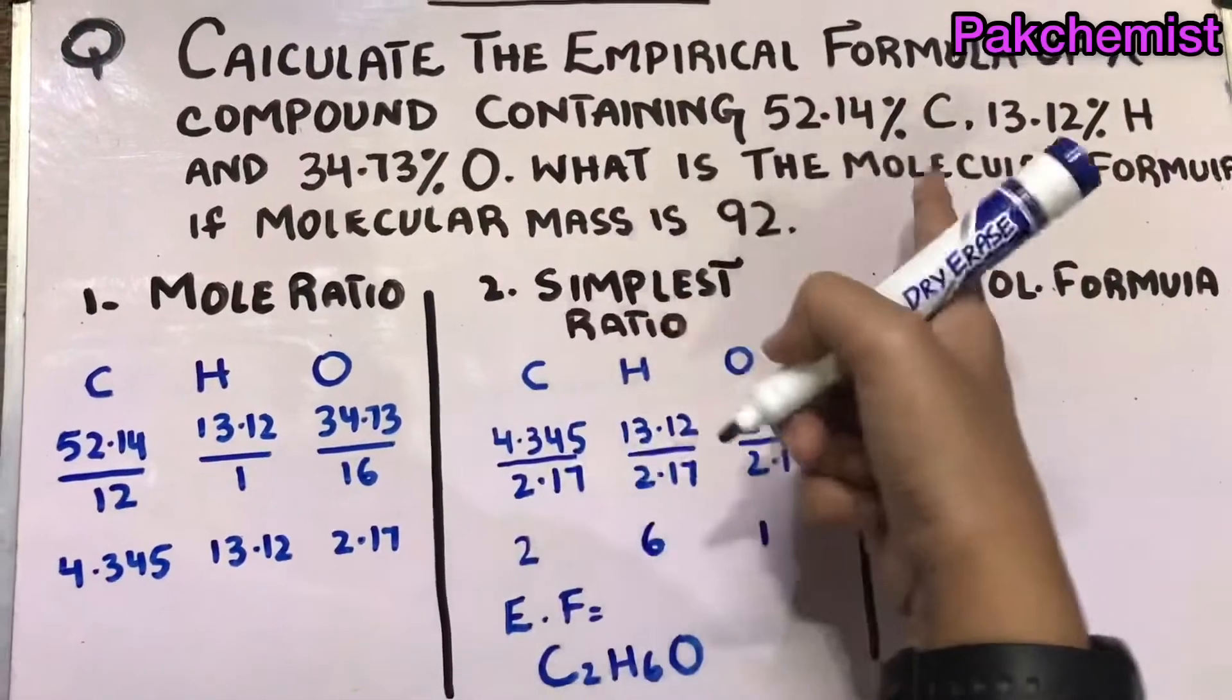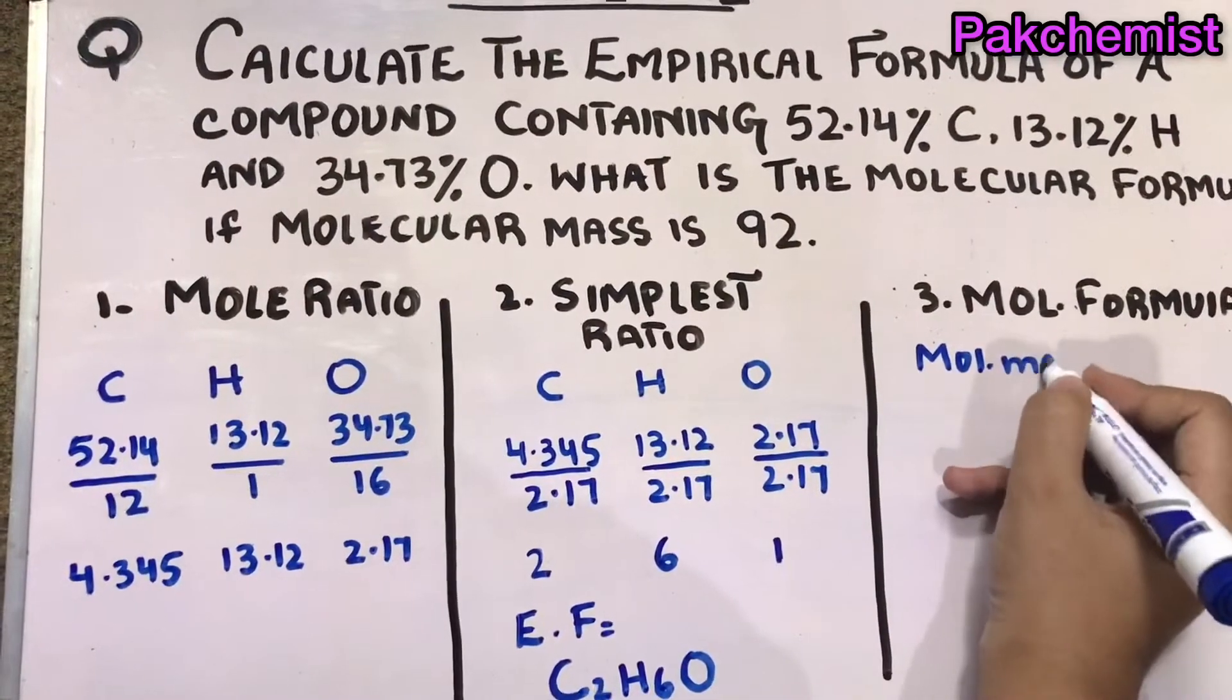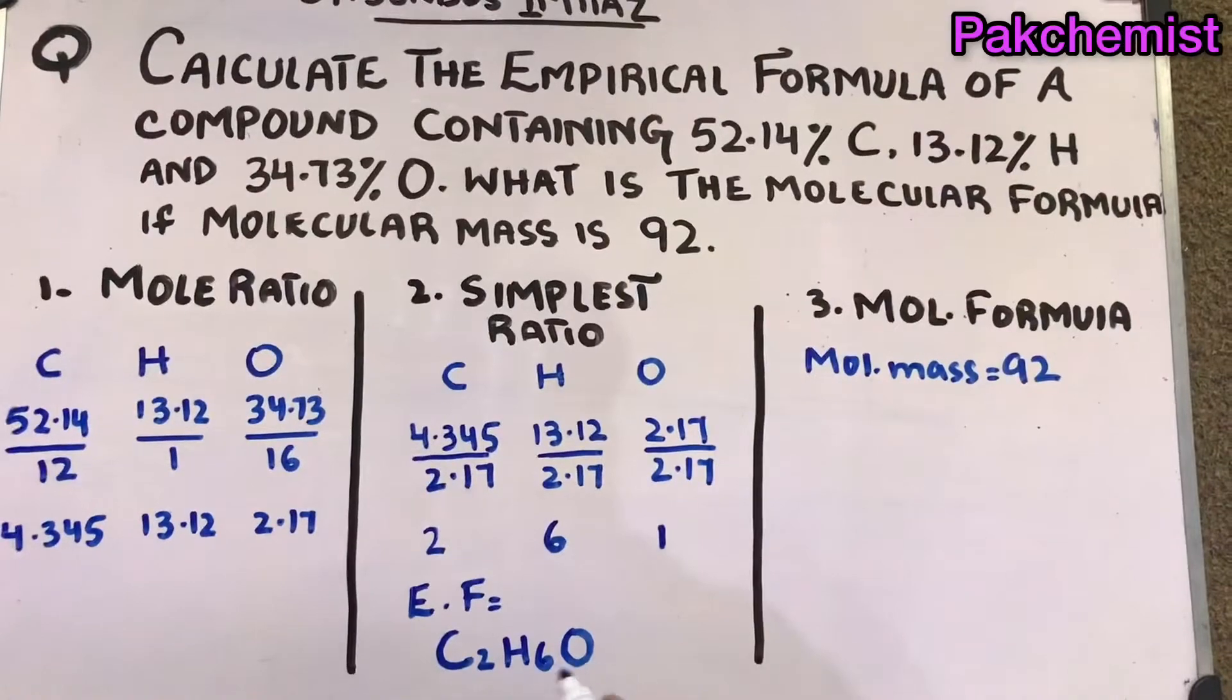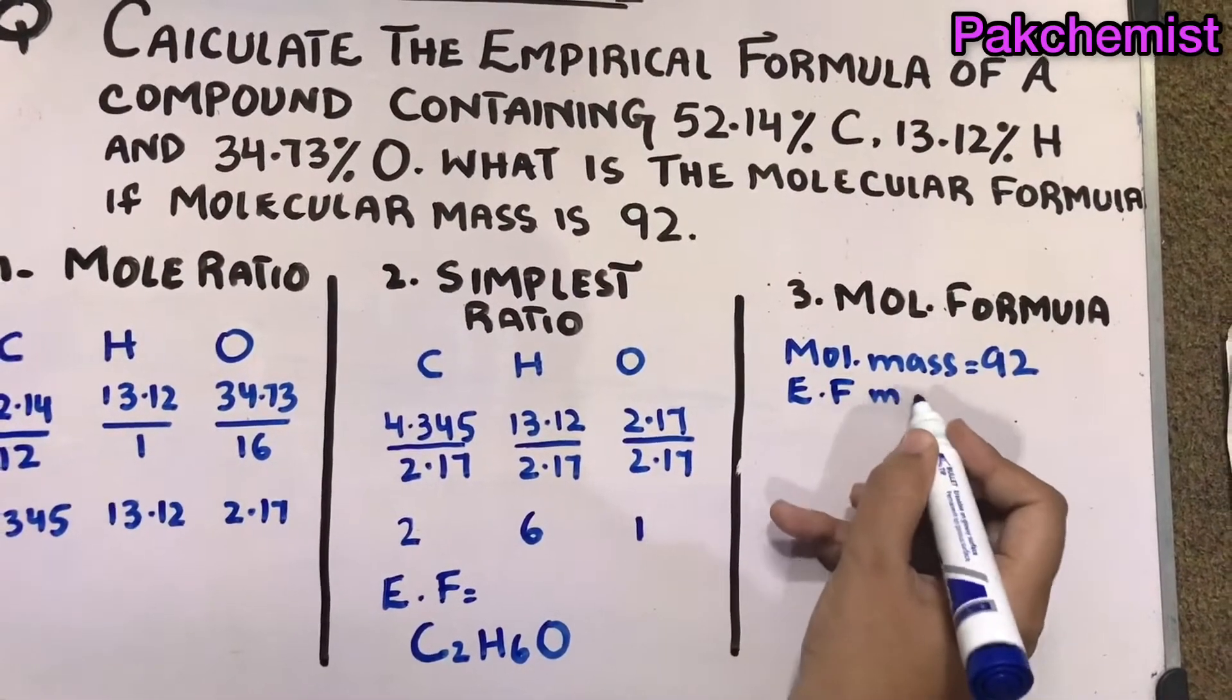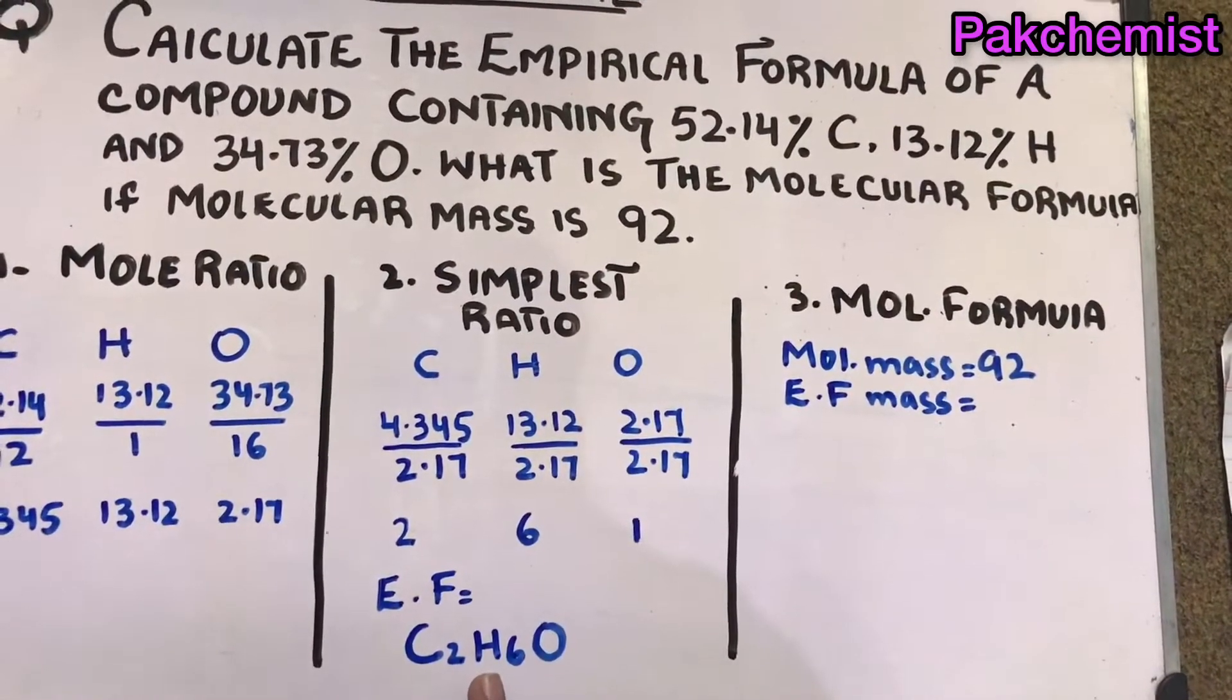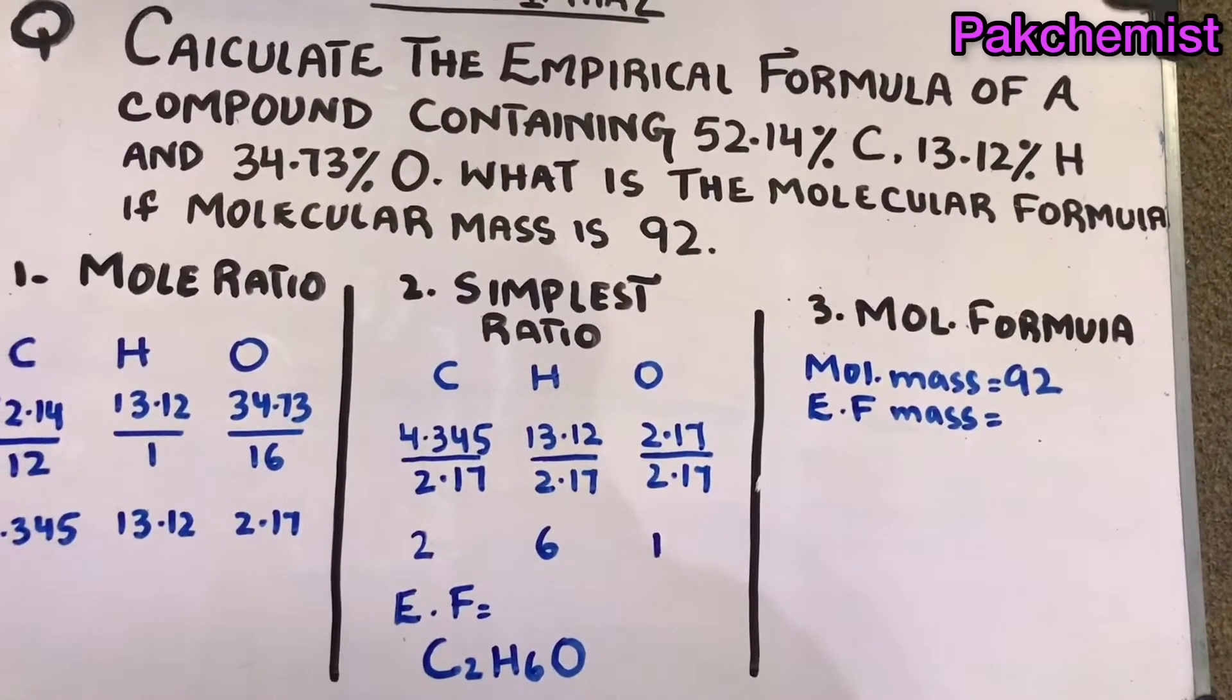Now our second question was: what is the molecular formula if molecular mass is 92? So first I write the molecular mass, that is 92. Then you have to calculate the empirical formula mass. If you don't know how to calculate the mass, you can go in the description box to see how to calculate the molar mass.